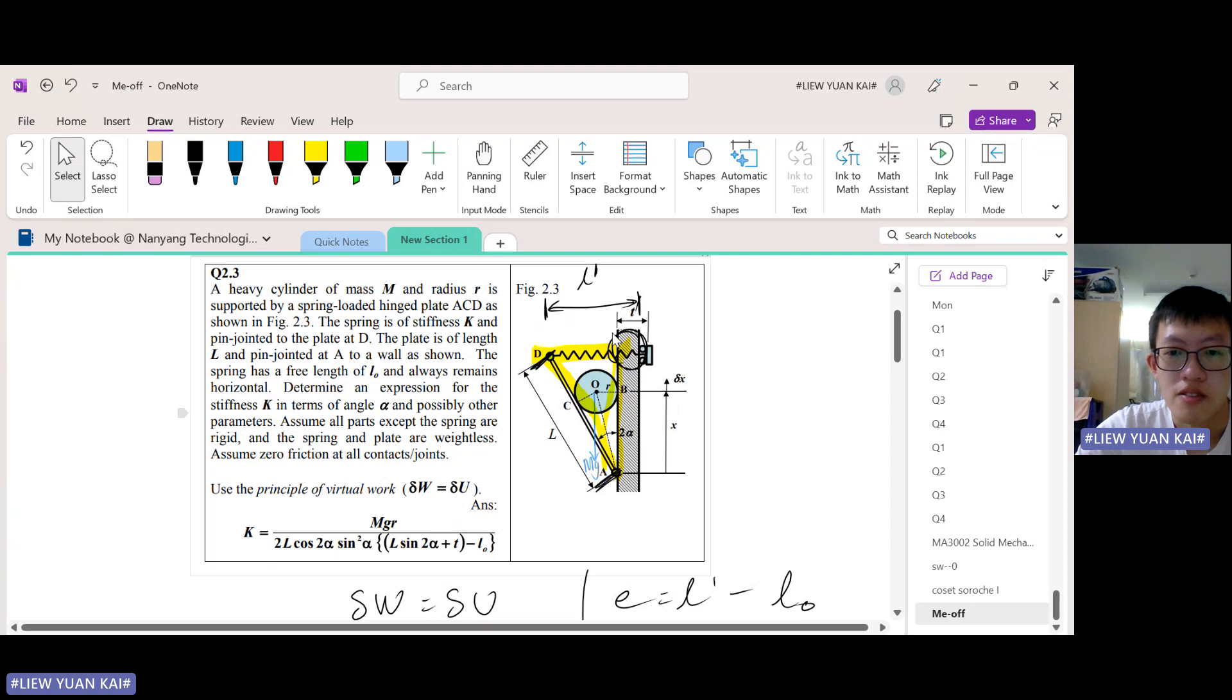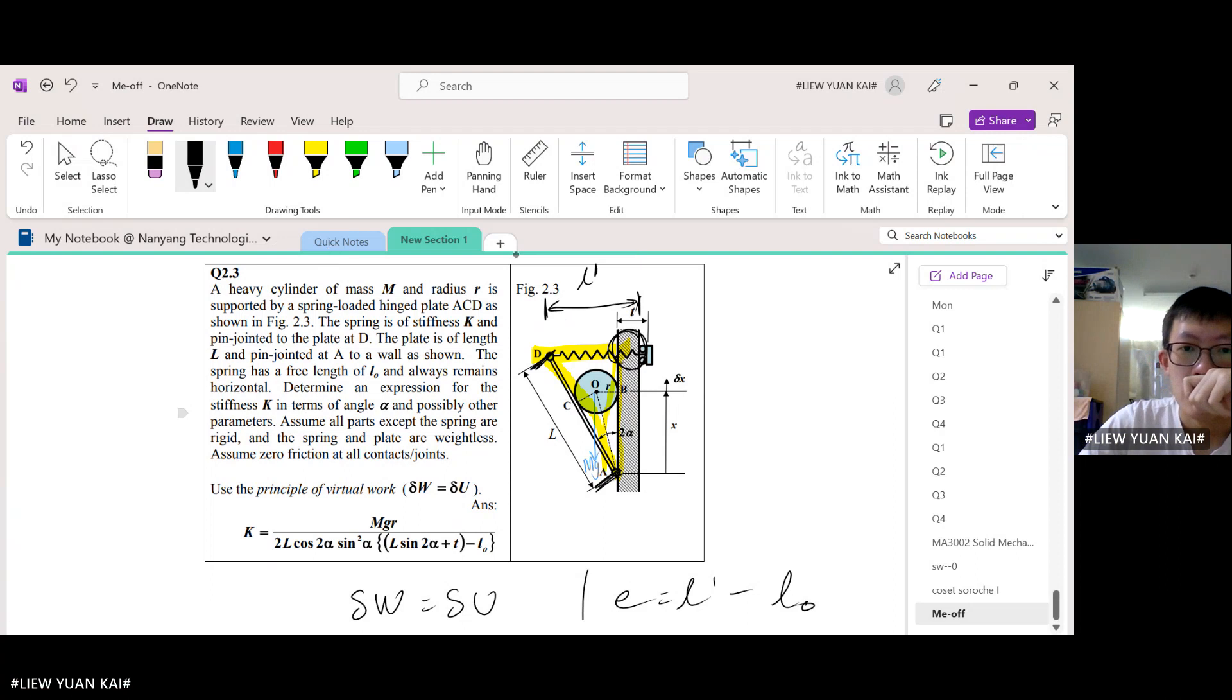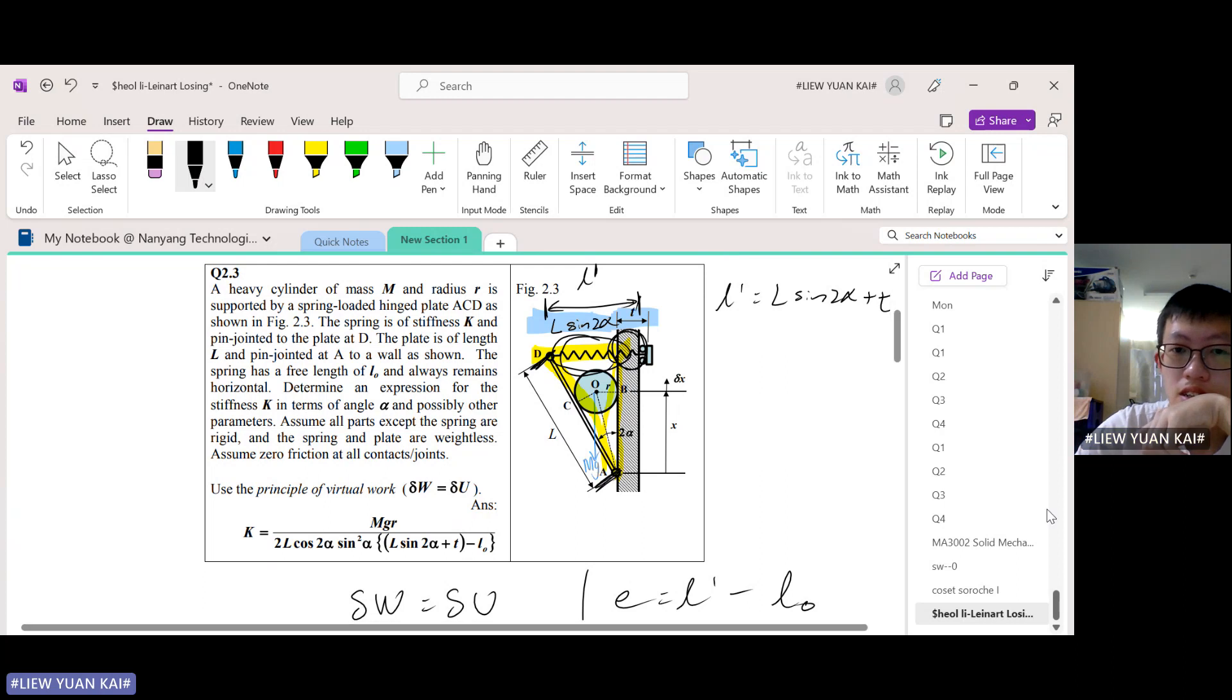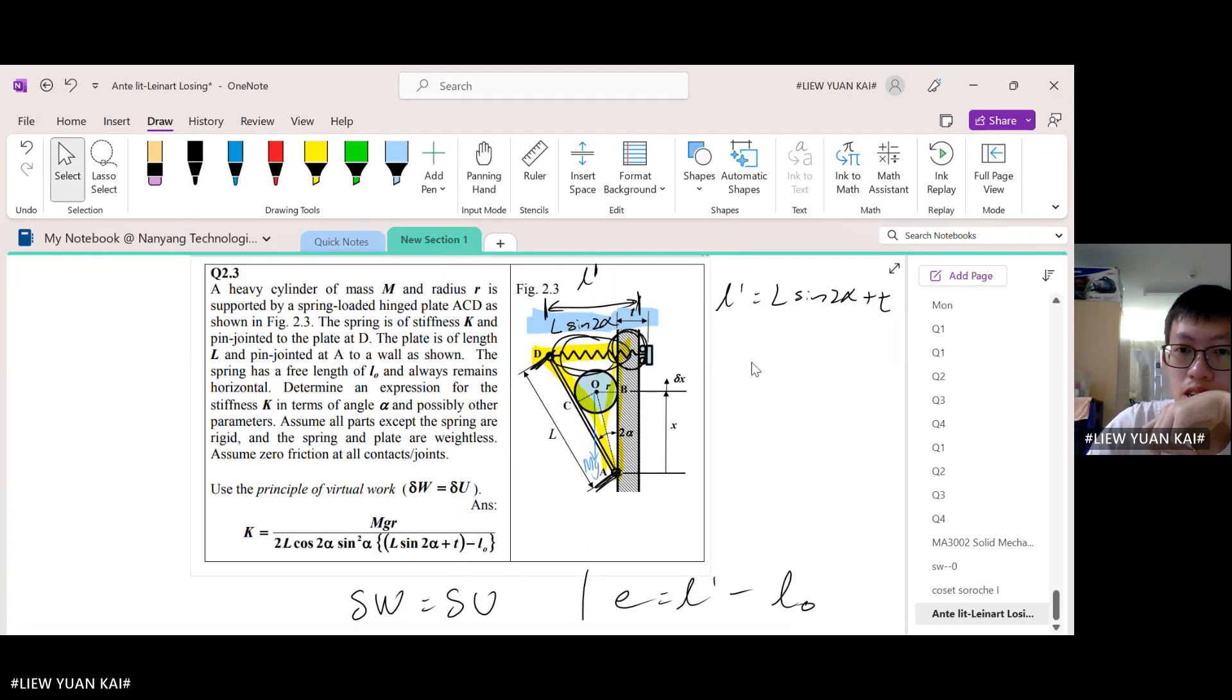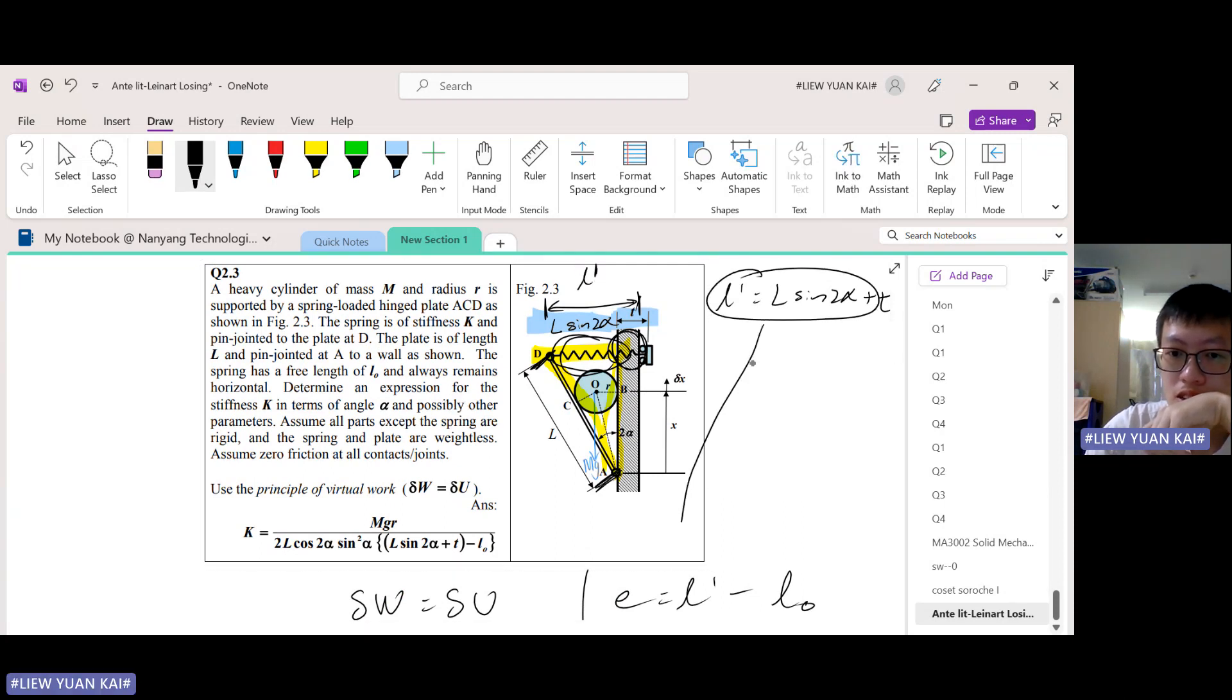The new length is what we're trying to find here. This, if you use a bit of trigonometry, you will know that this is actually L sin 2α. So that means L prime is given by the sum of this and this, which is L sin 2α plus T.